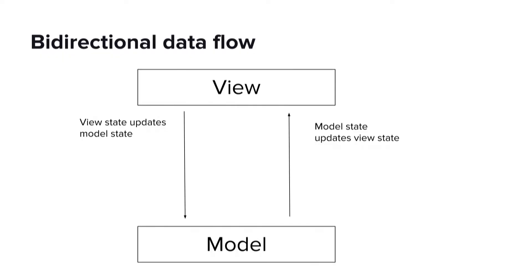The common principle is that state is passed between the two layers. The model might be changed by a polling network request or a system event, and when it changes, it'll tell the view to change as well. And the view might change in direct response to a user input event, and when the view changes, it tells the model to change.